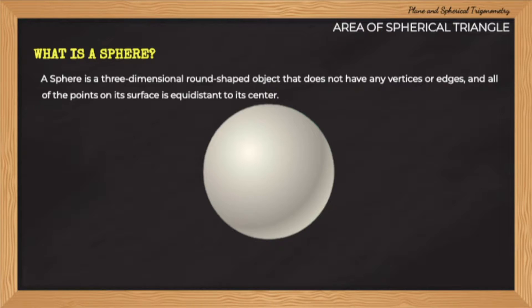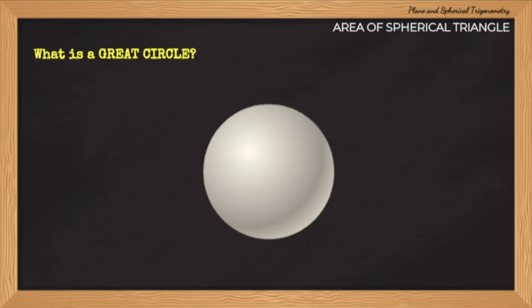To form spherical triangles, we need lines called the great circles. But what are the great circles? Great circles are basically the biggest circles that can be drawn on the surface of a sphere. Again, let me repeat that the biggest circle that can be drawn on the surface of a sphere is called a great circle.